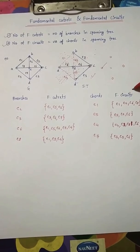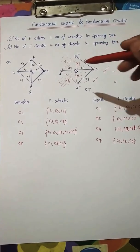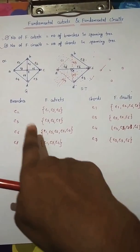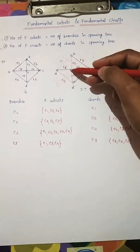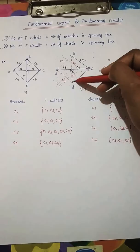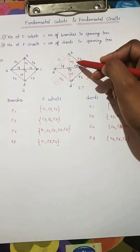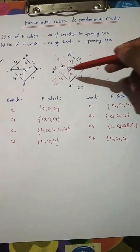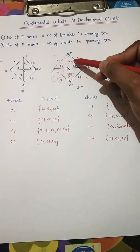Now coming to fundamental circuits. The basic principle is that there should be only one chord and there can be more than one branch — the concept is totally opposite to the cut set concept. The chords are e1, e5, e7, and e4. For chord e1, the fundamental circuit is formed by one chord and more than one branch, giving the circuit {e1, e2, e6, e8}.